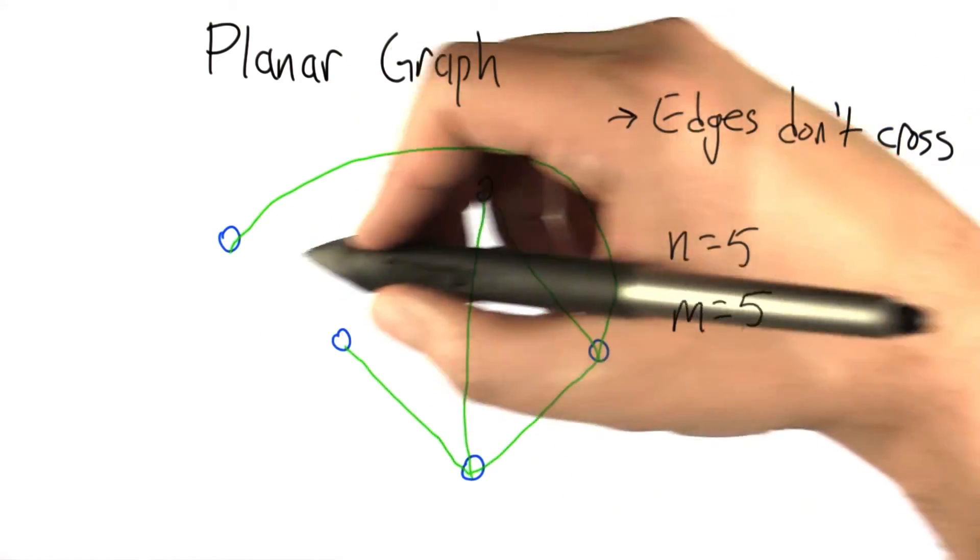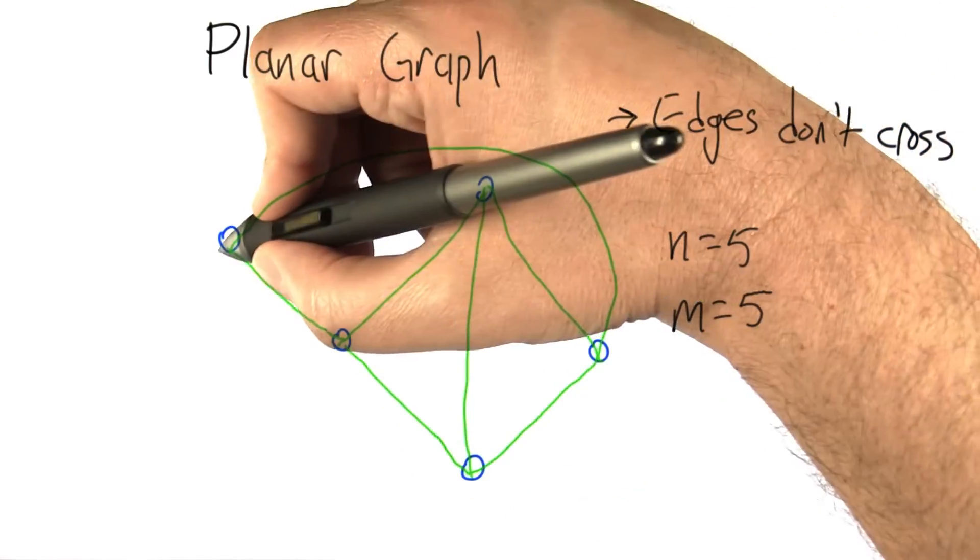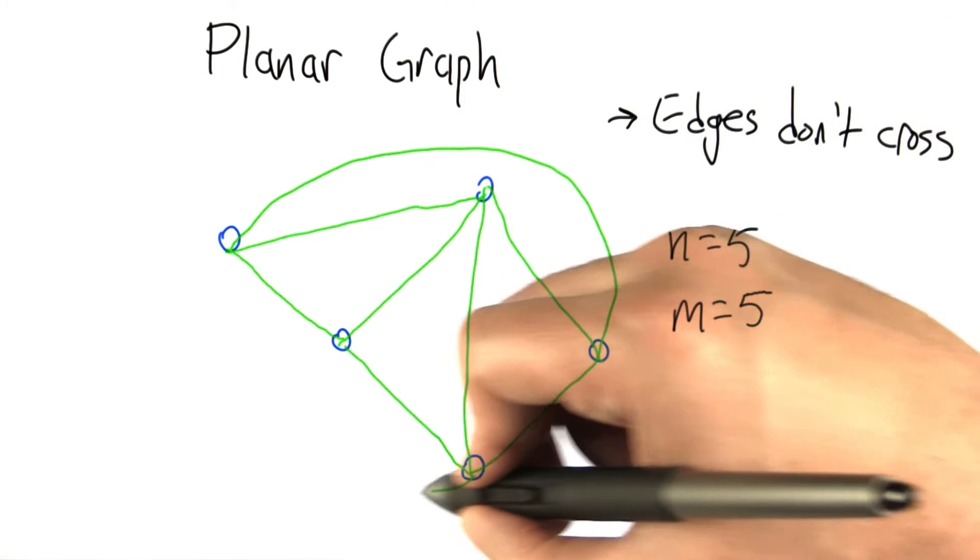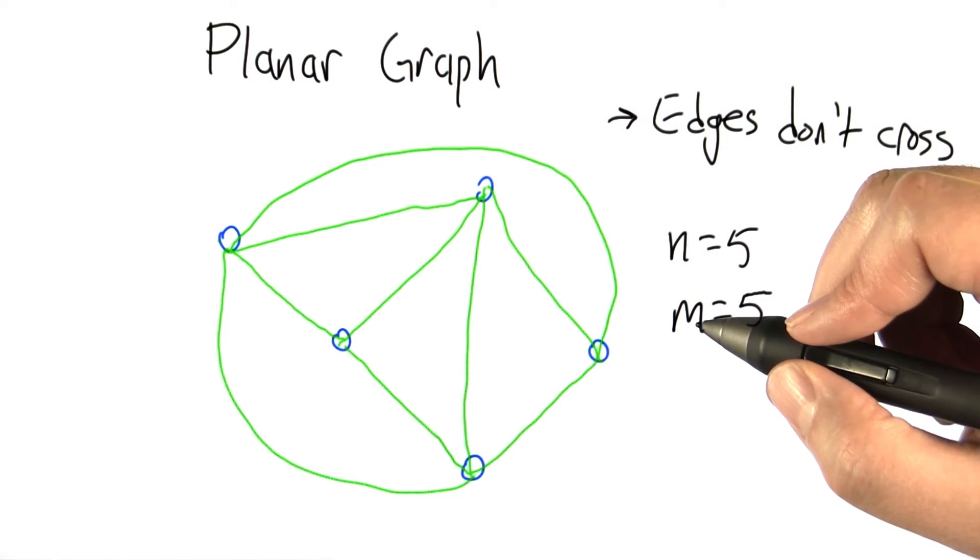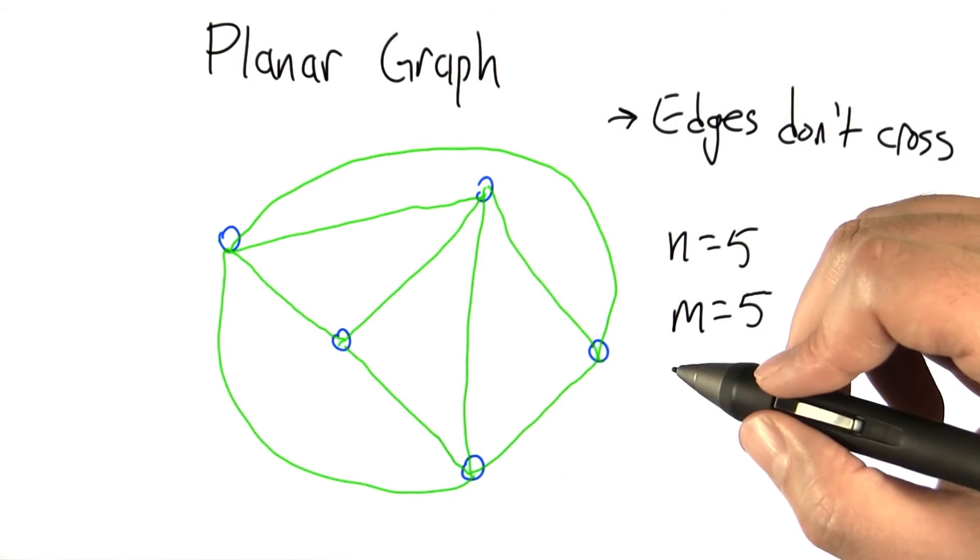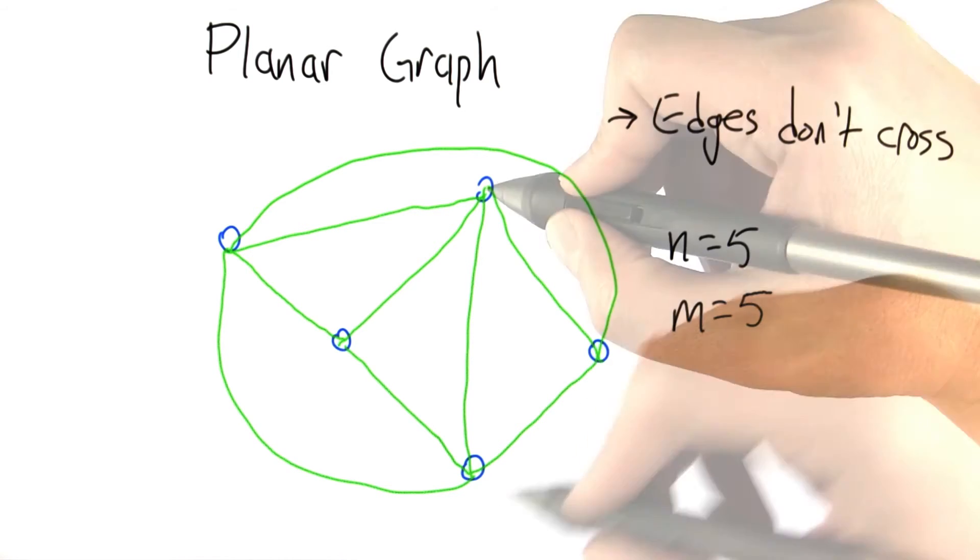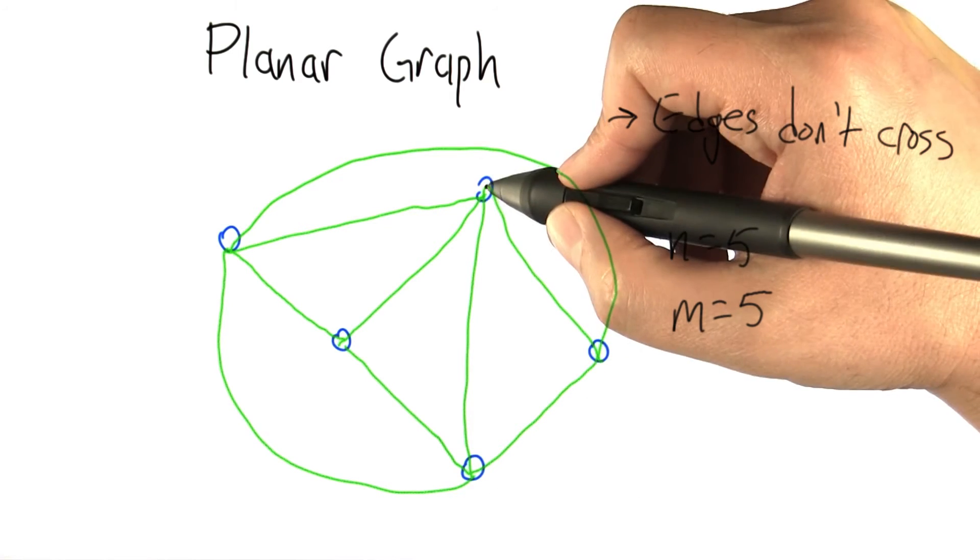Let's think about adding some edges here. We can add that edge. We can add this edge. We can add this edge. We can add this edge. And are there any more edges we can add while still being able to draw it in a plane? It doesn't look that way, right? This node is connected to all the other nodes. This one's done.